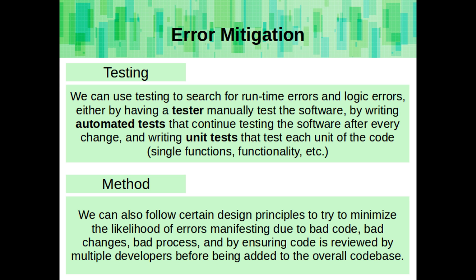We can write automated tests that continue testing the software and running through repetitive tasks over and over, so any time there's a change, if an automated test fails, it notes that something went wrong. Or we could write unit tests that test each unit of code, like a single function, separately — ensuring that when your code is changing, your program isn't inadvertently breaking.